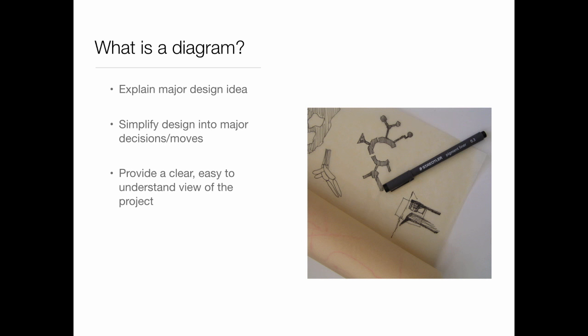A diagram is like a one-liner joke. There's one thing you're trying to describe about a particular building — maybe how the sun flows into it, maybe what places are public versus private. It's a very simple description. A lot of times when you're working in studio, you come up with a diagram that's far too complicated. It's meant to be simple, understood quickly, and give a clear overview of what that particular design spark was.